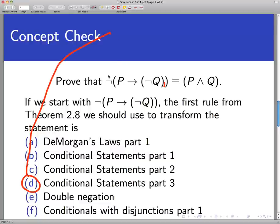I'm going to swap the p and q out from theorem 2.8 with a and b just to keep it a little clearer here. Conditional statements part three would say that the negation of a implies b is equivalent to a and the negation of b. And again, the reason why I think this rule applies best out of all the rules in theorem 2.8 is because on the most superficial level, the statement that you're working with is a negation of a conditional statement. There's some other stuff happening in here. The q is negated, but on the most superficial topmost level, this is the rule that most closely resembles the situation we're in.